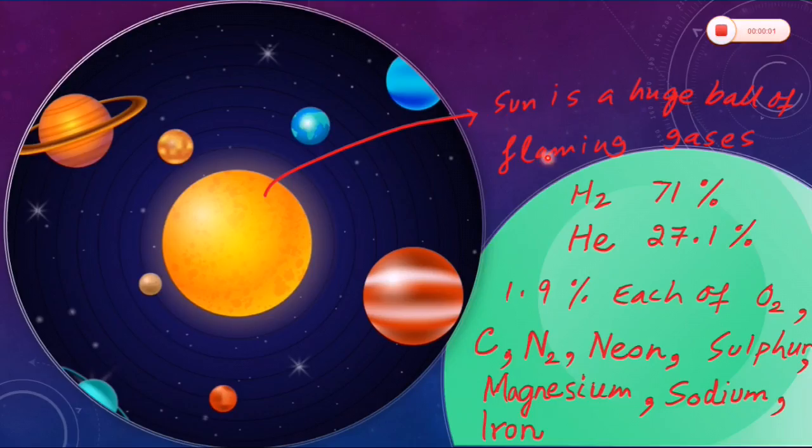So our Sun is a huge ball of flaming gases, and composition of each gas is different. Hydrogen is 71%, helium is 27.1%, and 1.9% is each of oxygen, carbon, nitrogen, neon, sulfur, magnesium, sodium, and iron.